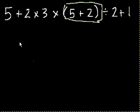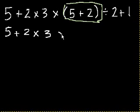So then we get, I don't know why my tool all of a sudden looks different, but anyway, we get 5 plus 2 times 3 times, now what's 5 plus 2? We did the parentheses first. Times 7 divided by 2 plus 1.